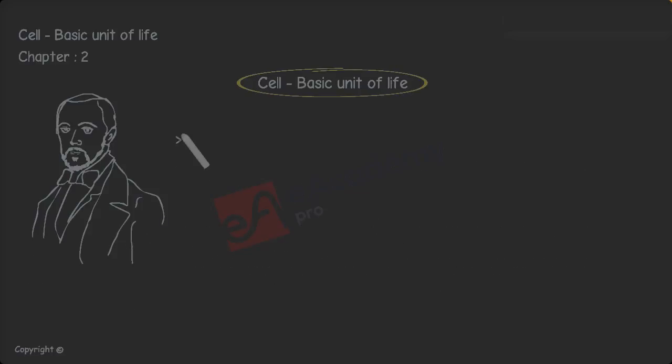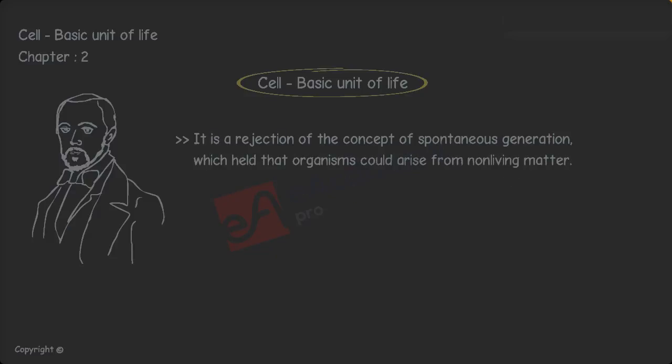It is a rejection of the concept of spontaneous generation, which held that organisms could arise from non-living matter. For example, maggots were believed to spontaneously appear in decaying meat.